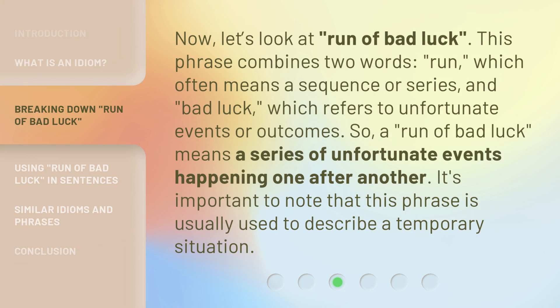Now, let's look at 'run of bad luck.' This phrase combines two words: 'run,' which often means a sequence or series, and 'bad luck,' which refers to unfortunate events or outcomes. So, 'a run of bad luck' means a series of unfortunate events happening one after another. It's important to note that this phrase is usually used to describe a temporary situation.